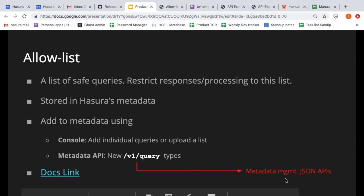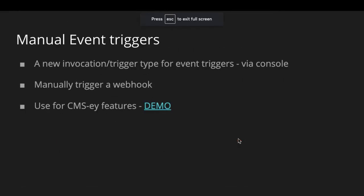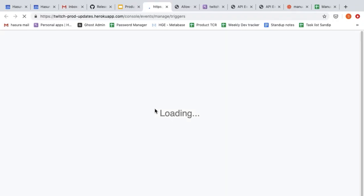Now we can move on to the next feature: manual event triggers. Those of you who have used event triggers will see a new invocation method or trigger type in the create event triggers page in the console. This is also available in the metadata APIs. What this new invocation mode lets you do is trigger one of your configured webhooks — whether serverless or regular — directly using the console.